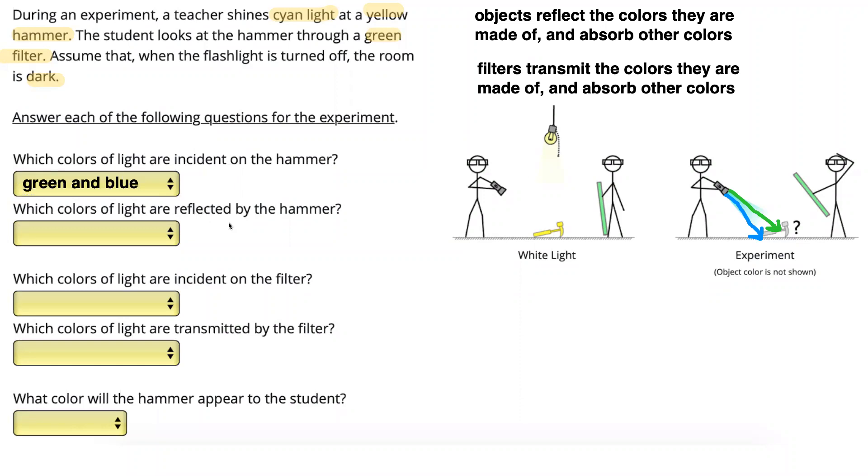Our next question is asking, which colors of light are reflected by the hammer? So for this, we're going to have to use our rule up here, which is the objects reflect the colors they are made of and absorb other colors. The yellow hammer is a secondary color made up of red and green. So yellow is able to reflect red and green. Let's just write that down. Yellow is made up of red and green.